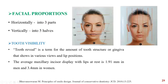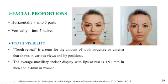Coming on to the facial proportions. Horizontally, the face is divided into 3 equal thirds, and vertically into 5 equal fifths. Horizontally, it is divided into 3 parts by lines from the upper hairline, supraorbital ridge, tip of the nose, and tip of the chin. Vertically, there is a central fifth, middle fifth, and lateral fifth. The central fifth extends from the canthus of one eye to the canthus of the other. The middle fifth involves the width of the eye, and the lateral fifth is from the outer border of the eye to the outer border of the ear. In an ideal face, the intercanthal distance is equal to the width of the eye, and the interpupillary distance is equal to the distance between the corners of the mouth.